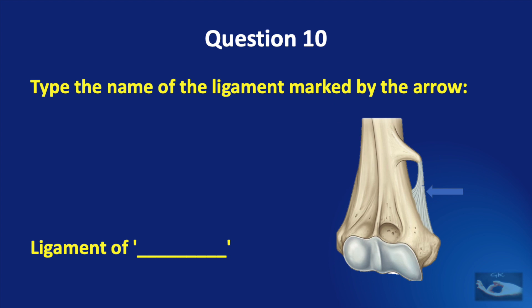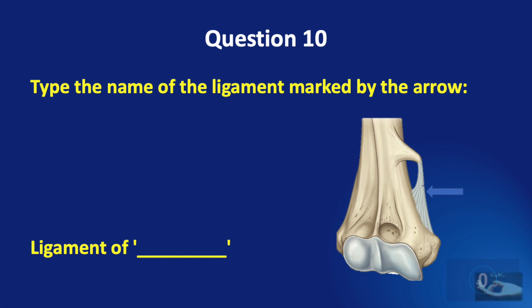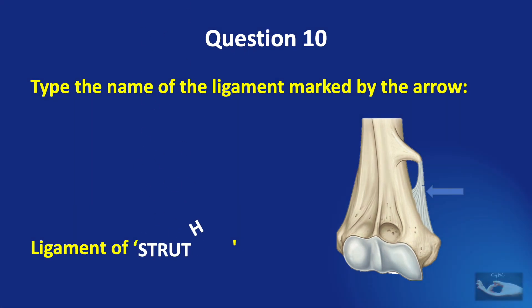Question number ten: type the name of the ligament marked by the arrow, the ligament of dash. And the answer is the ligament of Struthers.